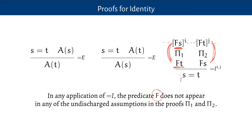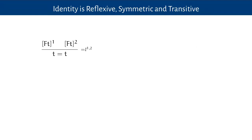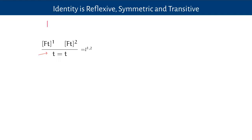For example, we can always prove that something is identical to itself. Here is a tiny proof that t is identical to t. We start with the assumption that t has property F, stated twice explicitly. We've proved that t has property F from the assumption that t has property F — we've gone from t to t, and from t to t backwards. Both instances are satisfied, so we can discharge the assumptions immediately and conclude that t is identical to t. This is called the reflexivity of identity: things are identical to themselves.